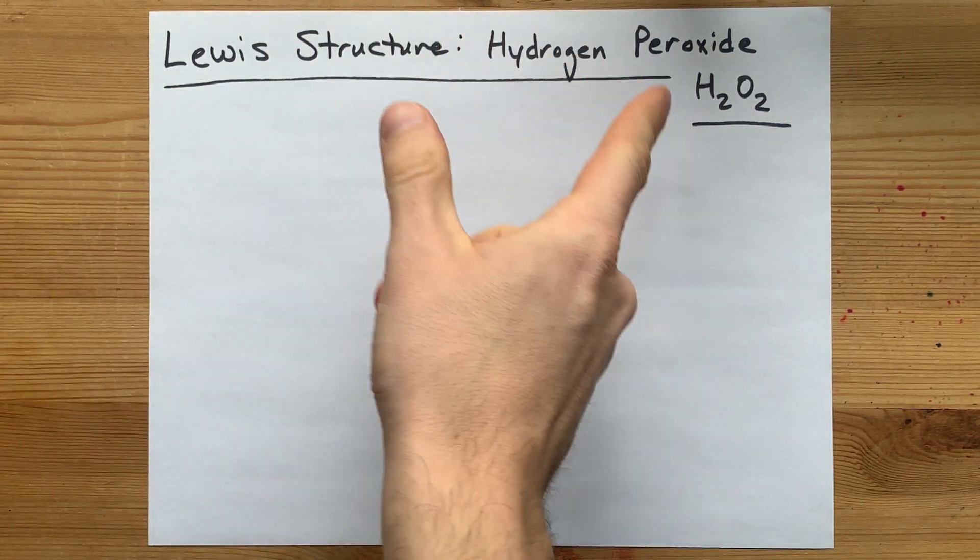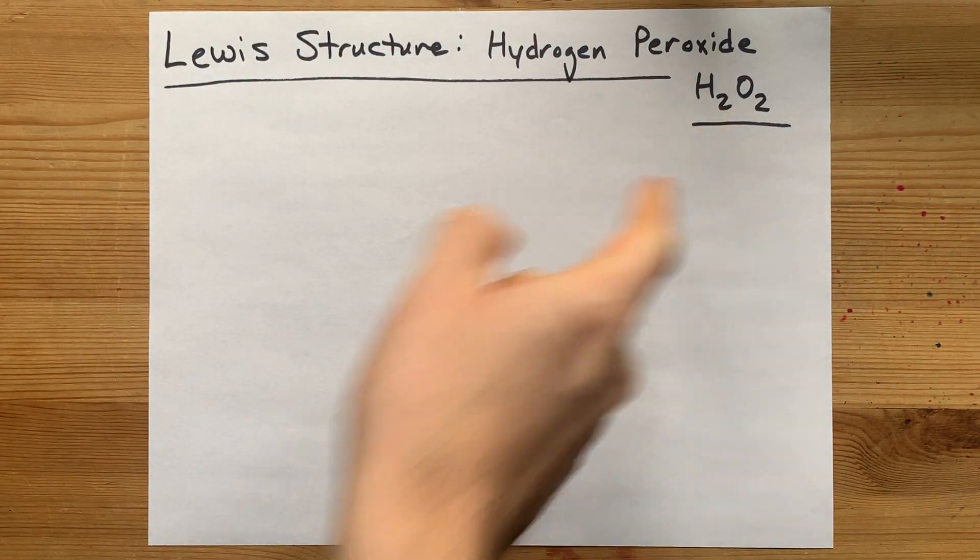We are going to draw the Lewis structure for hydrogen peroxide, H2O2.